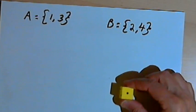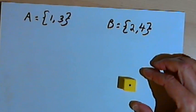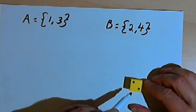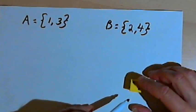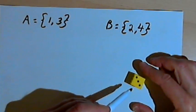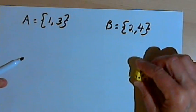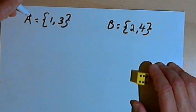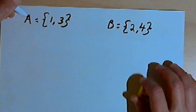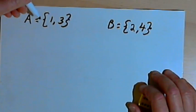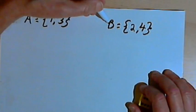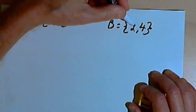I've got a die. It's a cube with six sides — one side has one dot, then there's two dots, three dots, four, five, and six. I've got two events: Event A is throwing either a 1 or a 3, and Event B is throwing either a 2 or a 4.